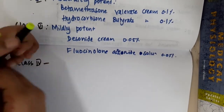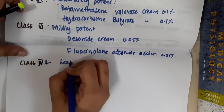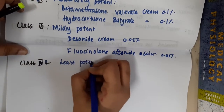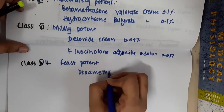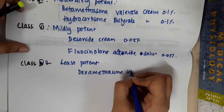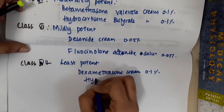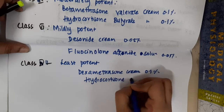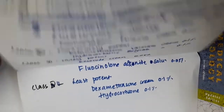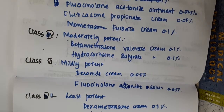Class 7 is the least potent. This includes dexamethasone cream at 0.1% and hydrocortisone cream at 0.1%. These are the classifications of topical steroids based on potency. Thank you for watching.